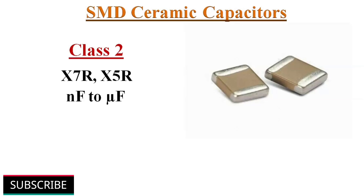Class 2 ceramic capacitors are X7R and X5R ceramic capacitors, usually in light brown color. They are suitable for higher capacitance applications, with capacitance values in the range between nanofarads and microfarads.